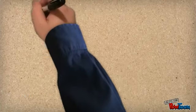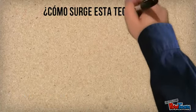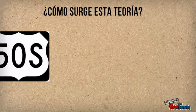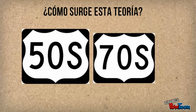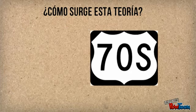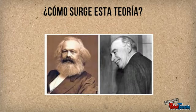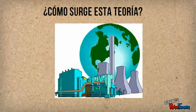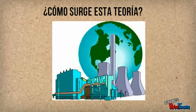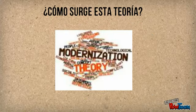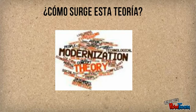La teoría de la dependencia surge a finales de la década de los 50 y a mediados de los 70, combinando elementos neomarxistas con la teoría económica keynesiana, ofreciendo el argumento más convincente contra los exponentes de la teoría de la modernización.